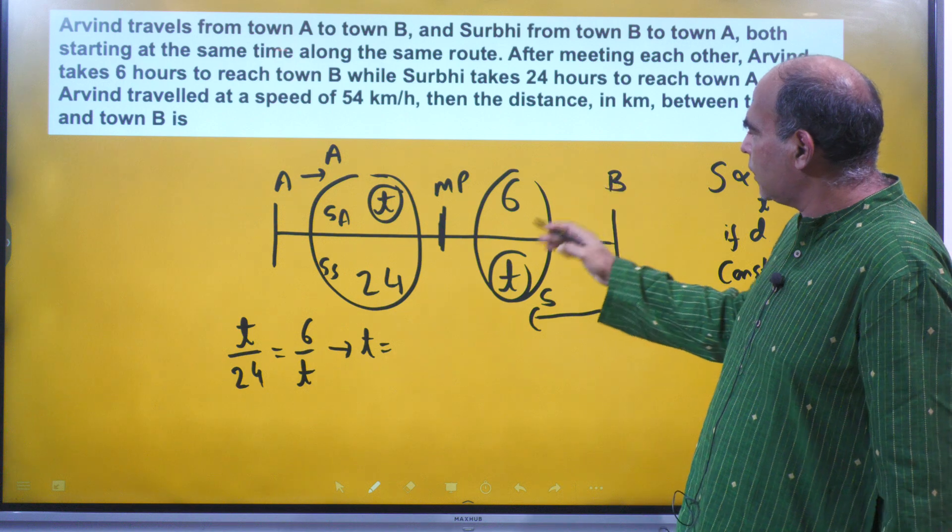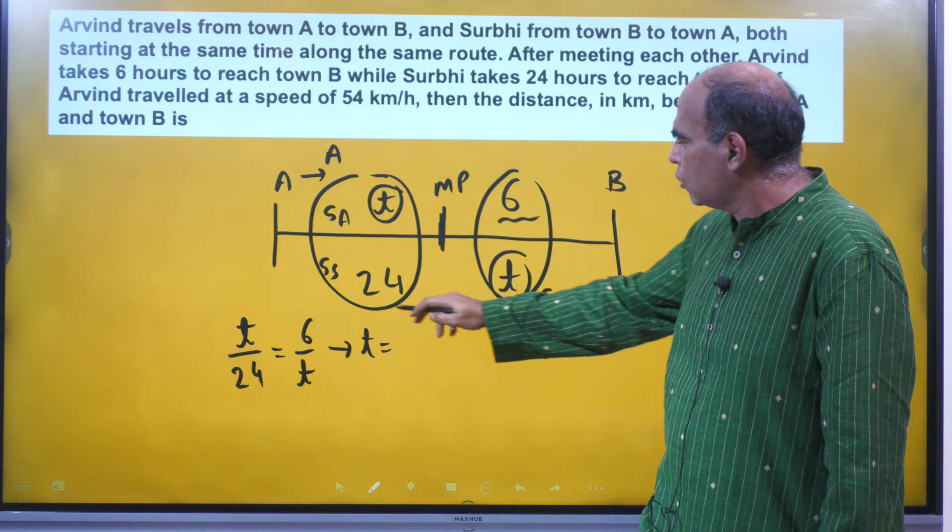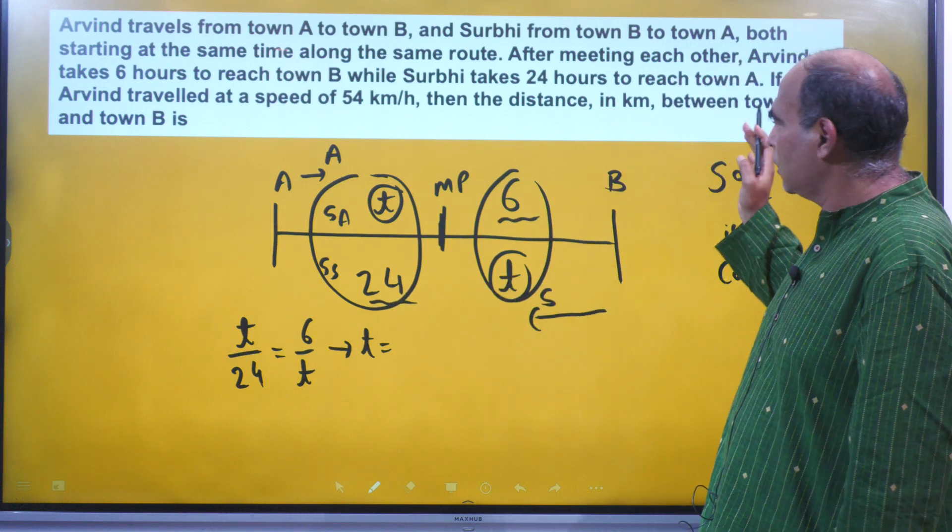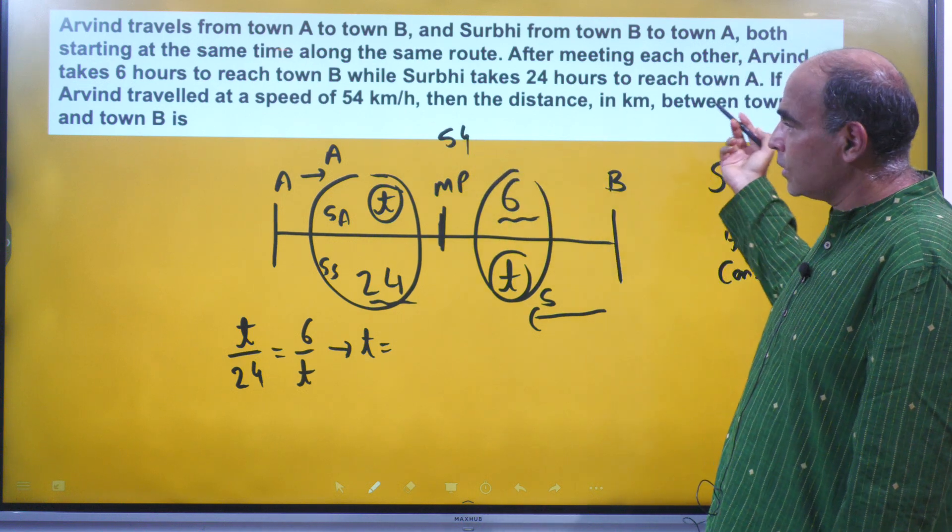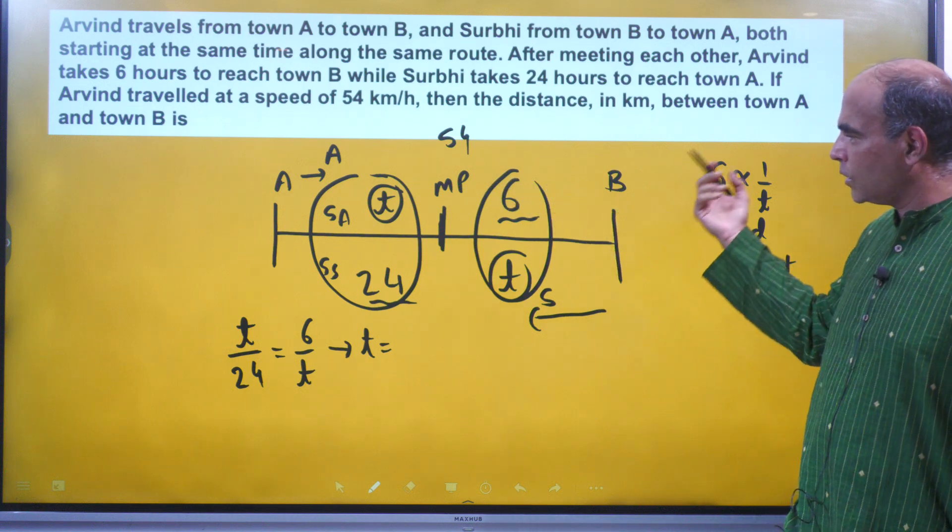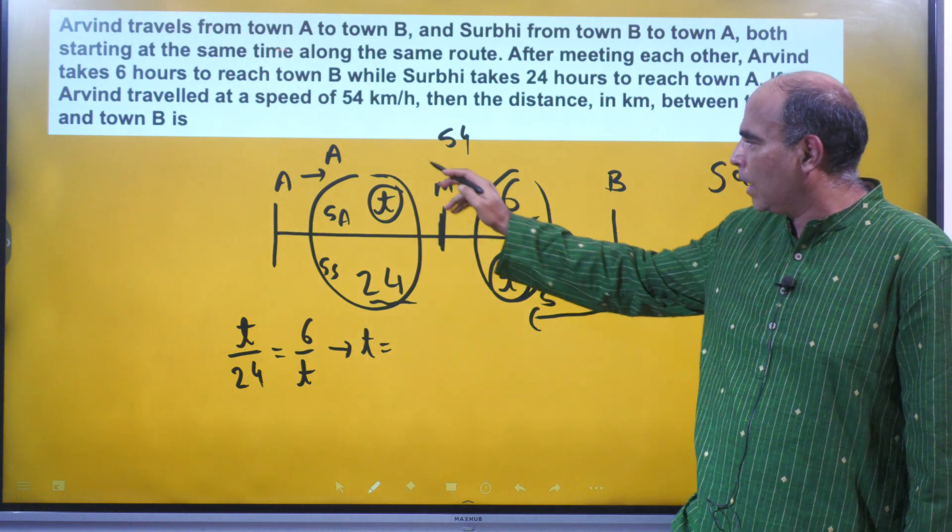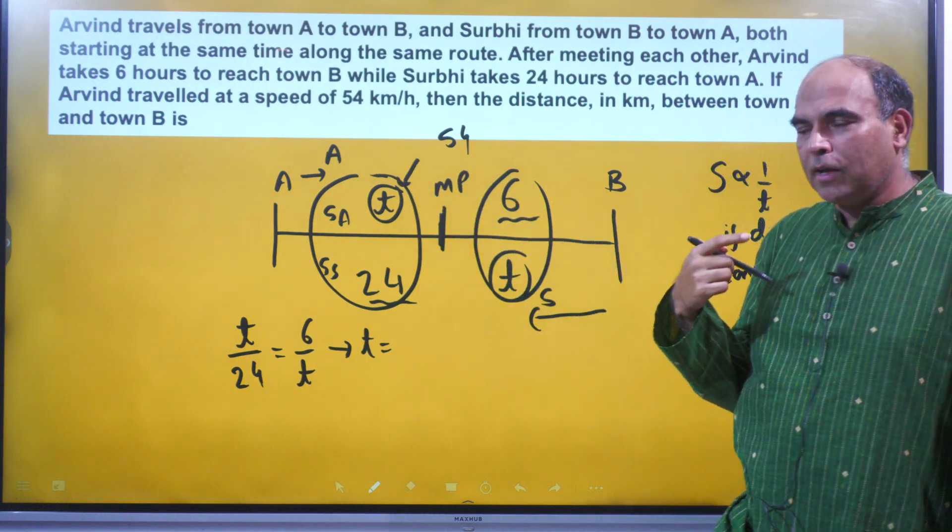So after meeting each other, Arvind takes 6 hours, Surbhi takes 24 hours to reach town A. If Arvind traveled at 54 kilometers per hour, then the distance in kilometers between A and B is - so distance nikalna hain. Distance nikalne ke liye time nikalna padega, or time nikalne ke liye...